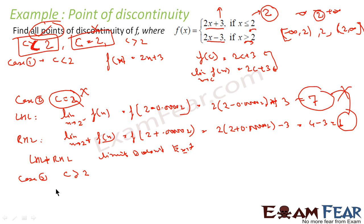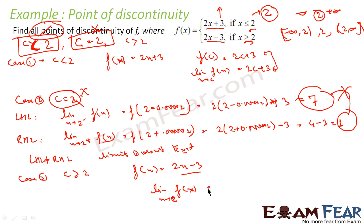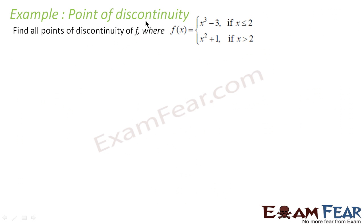Case three: c greater than two. For c greater than two, f(x) becomes 2x minus 3. Here also it is a polynomial function, so it has to be continuous. For polynomial functions we know the limit exists and equals f(c). So for c greater than two, the function is continuous. To summarize: c less than two — continuous; c equals two — not continuous; c greater than two — continuous. So the whole function is discontinuous only at c equals two.